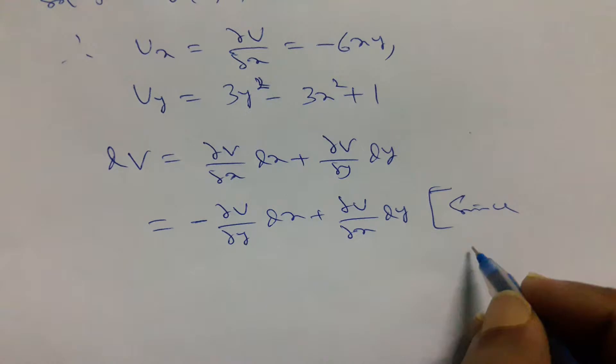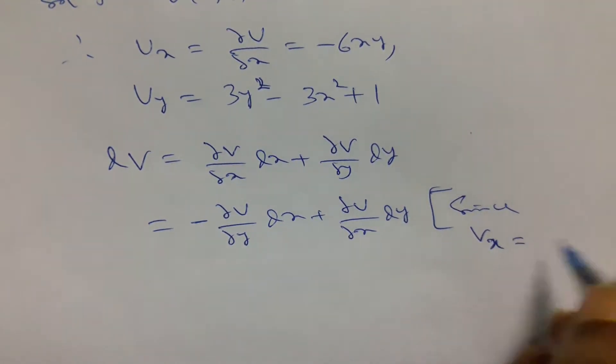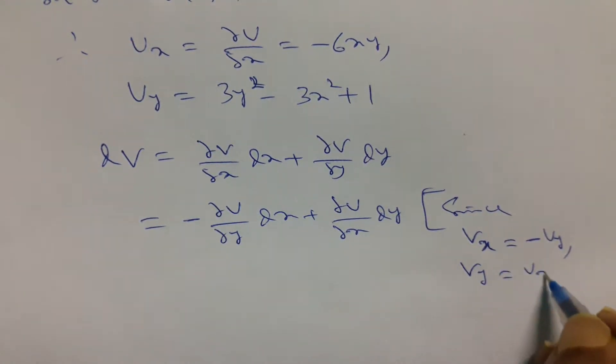Since vx equals to minus uy and vy is equal to ux by CR equations or Cauchy Riemann equations.